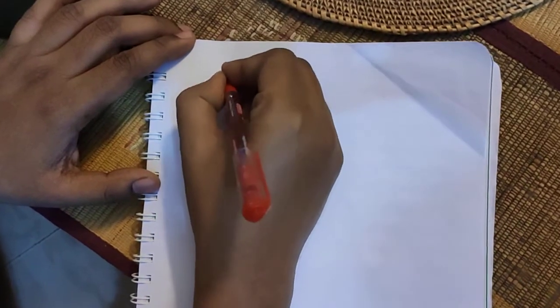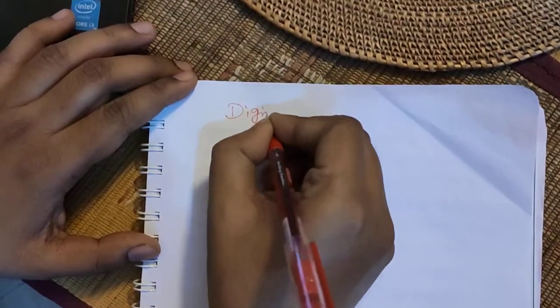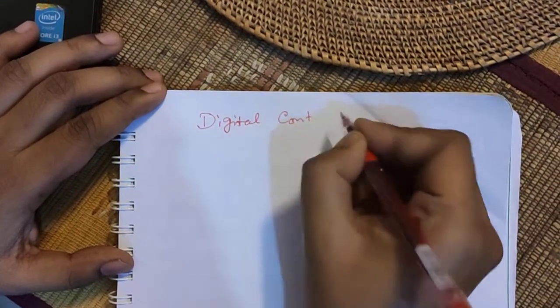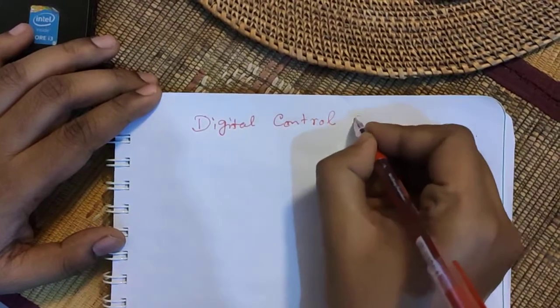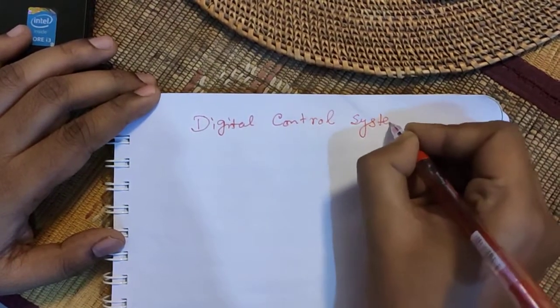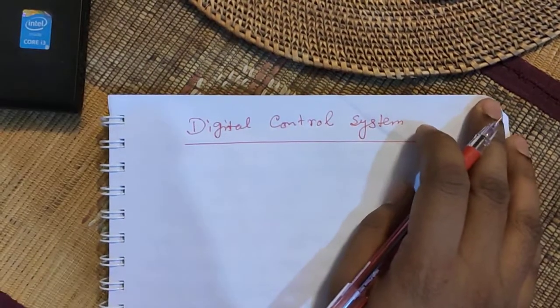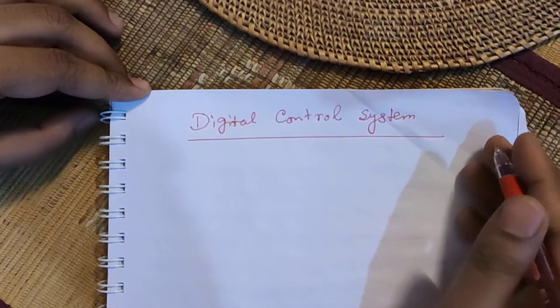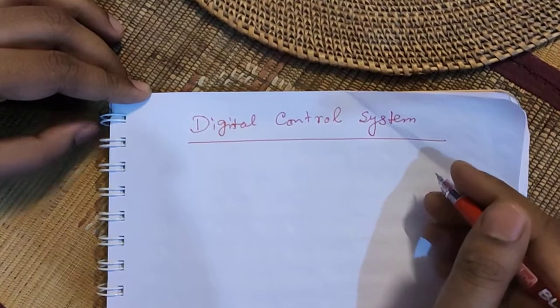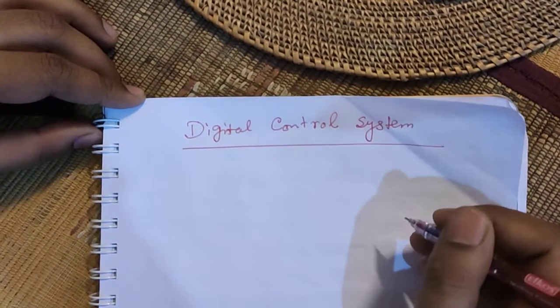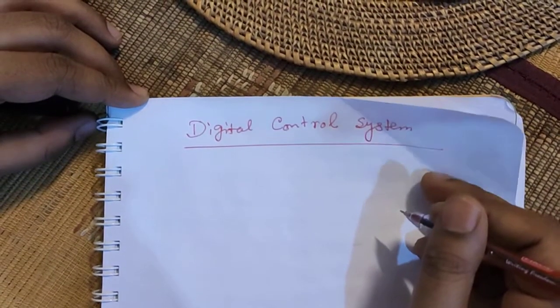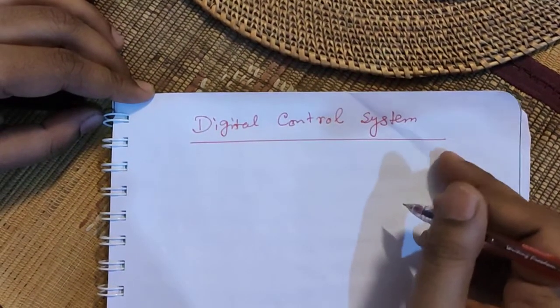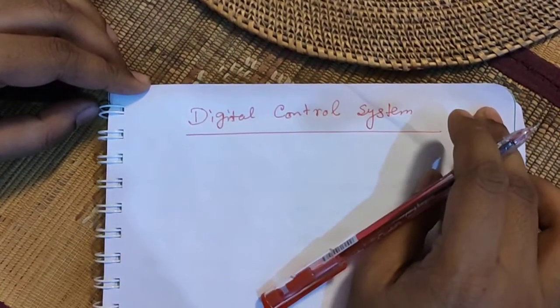We shall now start the module of digital control system, also known as discrete control system. So far, whatever we have studied in control systems — whether linear or non-linear — both are for continuous signals. But today's demand and today's technology requires the digitization of every system and every piece of equipment.